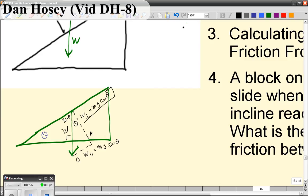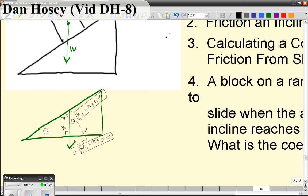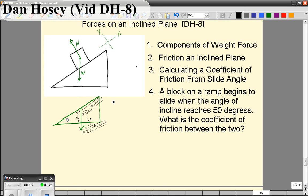Now, in the future, you don't need to re-derive this every time, but you do want to keep in mind that any time you have something on a ramp, the component parallel to it, the weight force parallel is always going to be mg times the sine of theta.